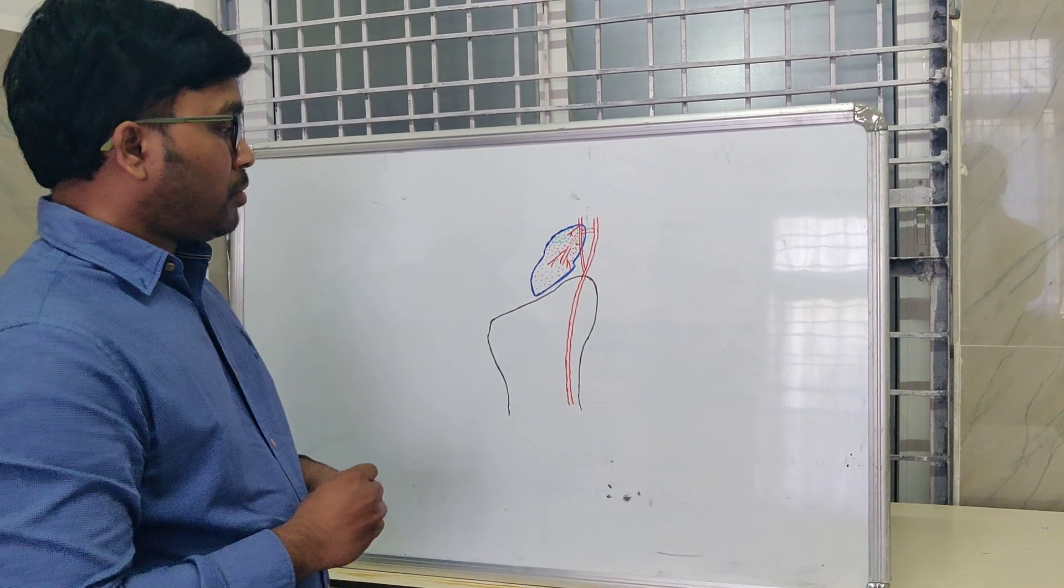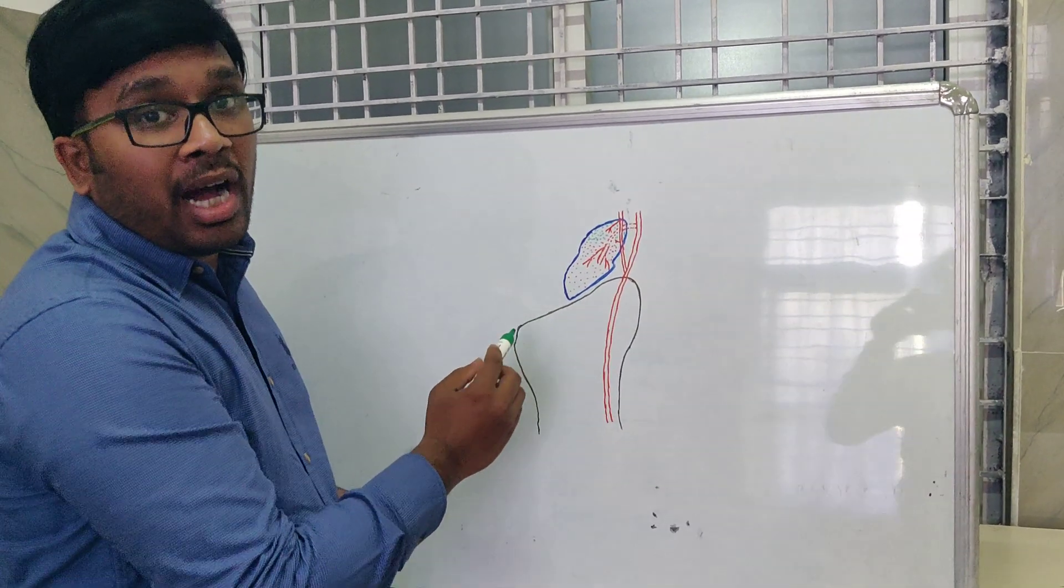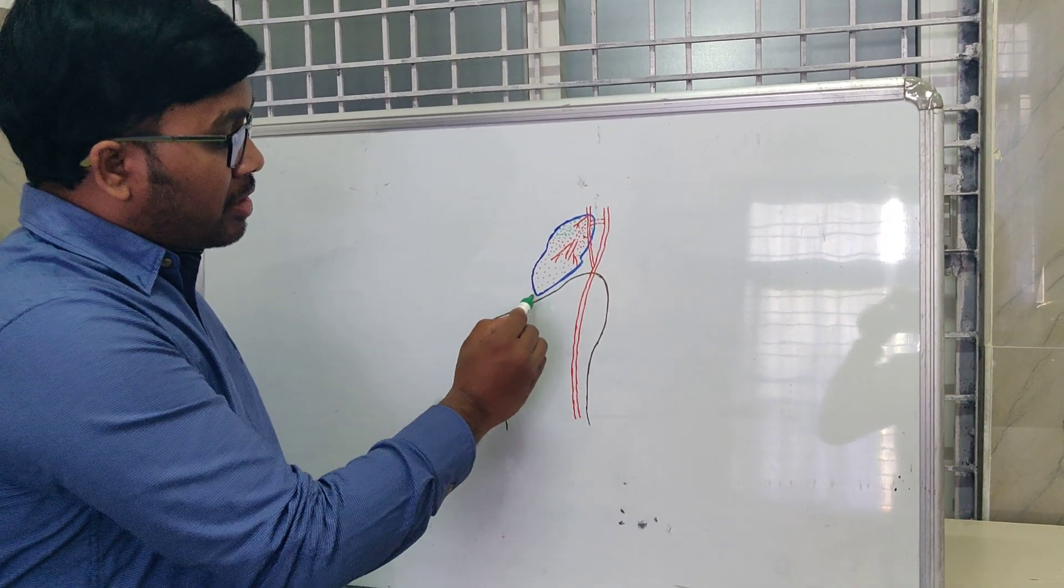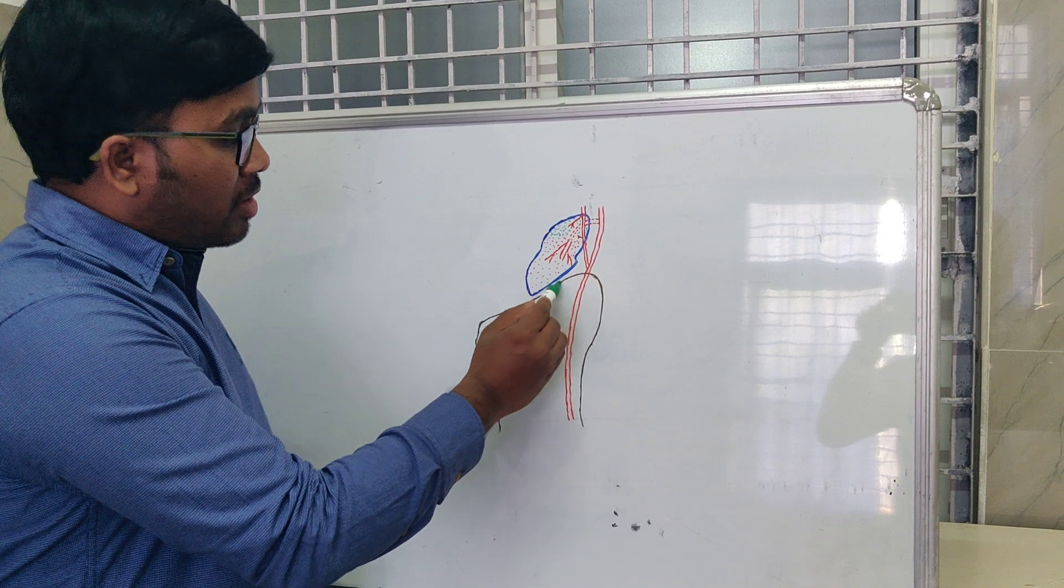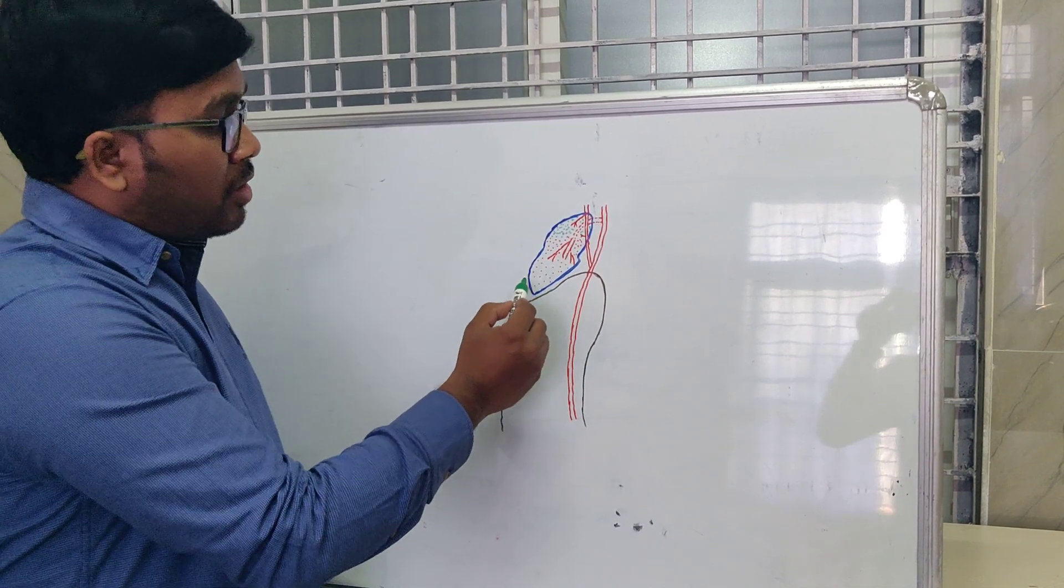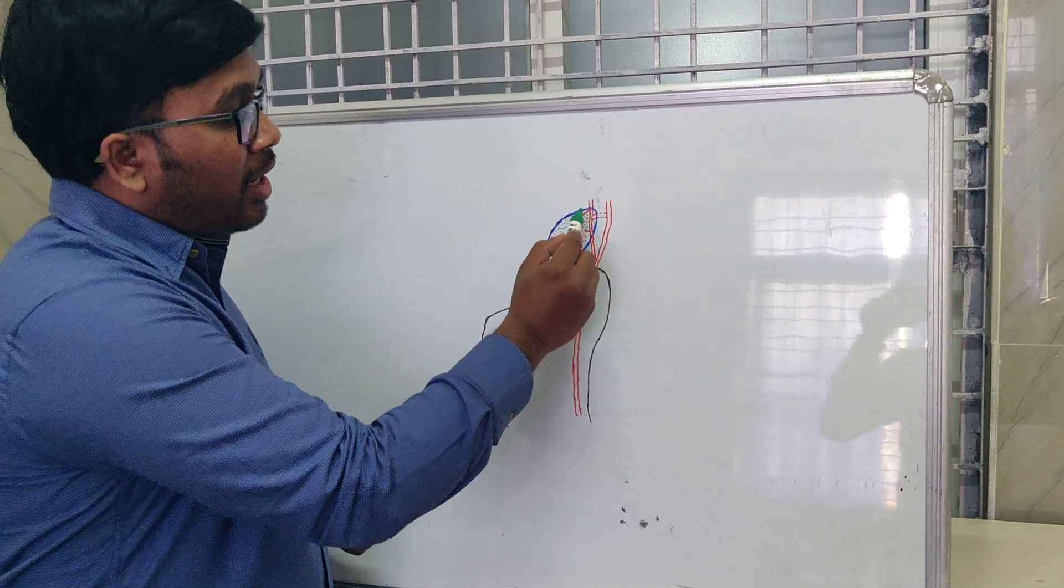If you look at this diagram, the scaphoid bone, as you can see, articulates with the distal end of the radius at the scaphoid fossa. This is the scaphoid fossa. This is the scaphoid bone with the proximal pole, the waist, and the distal pole.